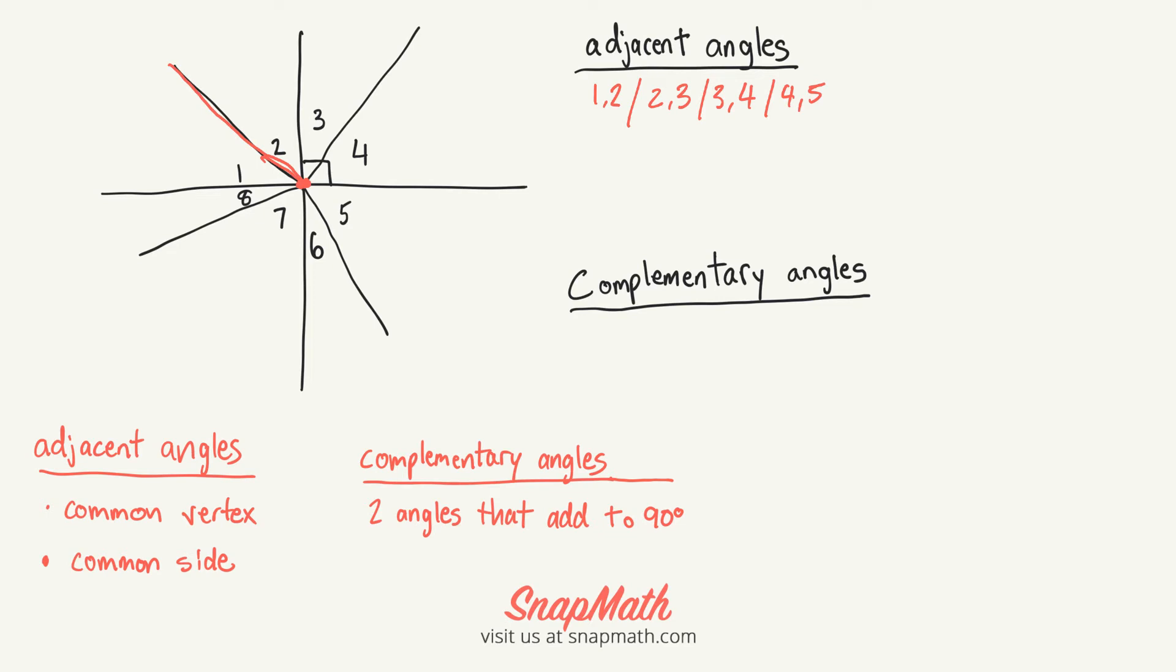The next set of angles we need to find are complementary angles. So complementary angles are two angles that add up to 90 degrees. As you can see here, we have a 90-degree angle right here. So that means angles 3 and 4 are complementary.